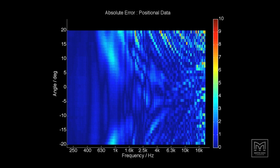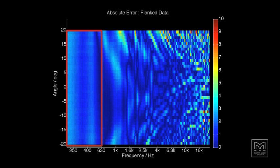Now using the flanked data. Below 630 Hz there is some increase in error but on the whole, correlation between predicted and measured is again quite good.